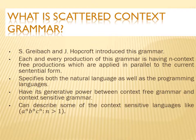Because this grammar is having N context-free productions and these productions are to be applied in parallel to the current sentential form, it can describe some of the context-sensitive language as well, like A to the power N, B to the power N, and C to the power N.